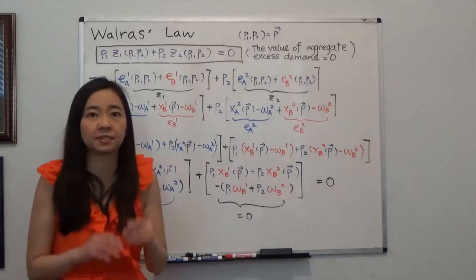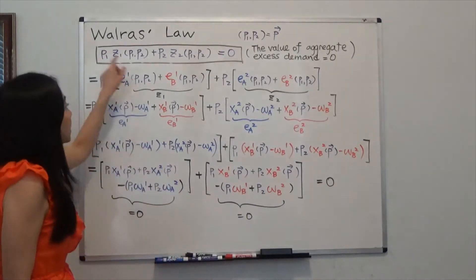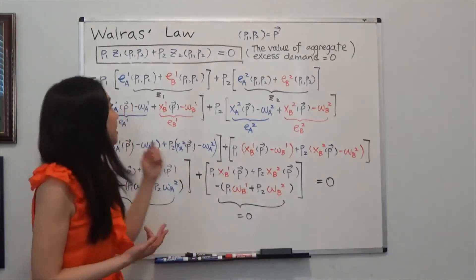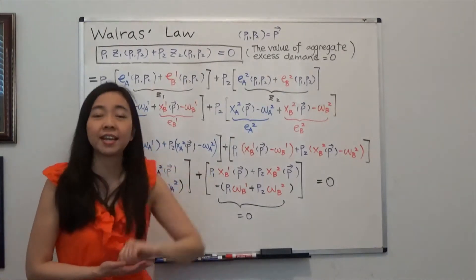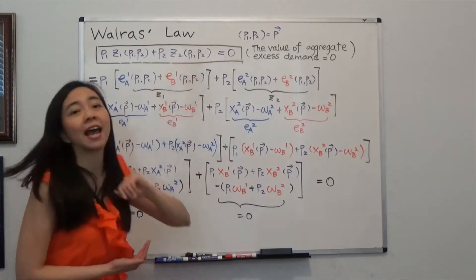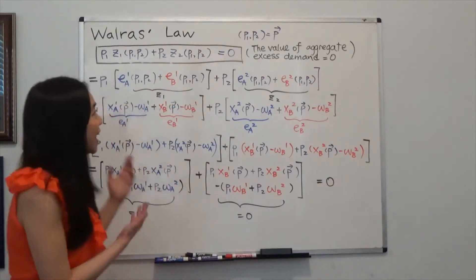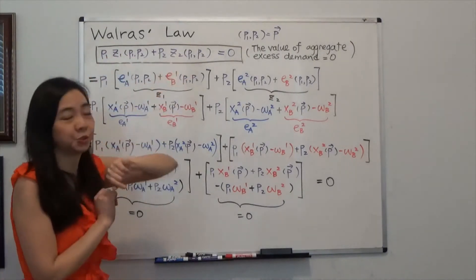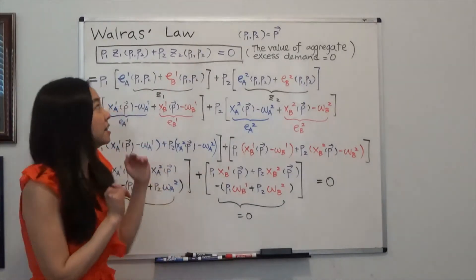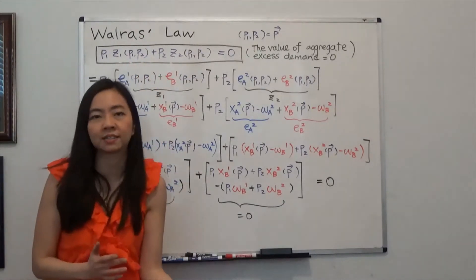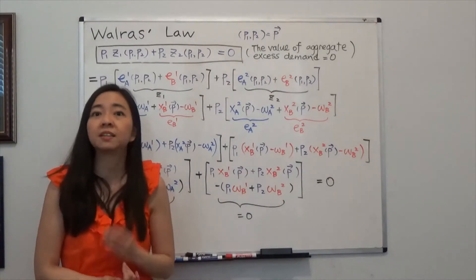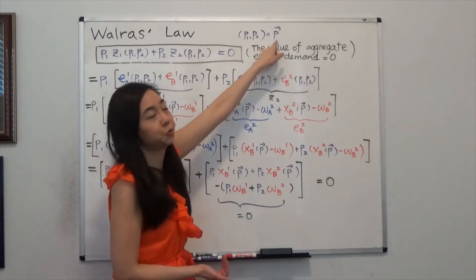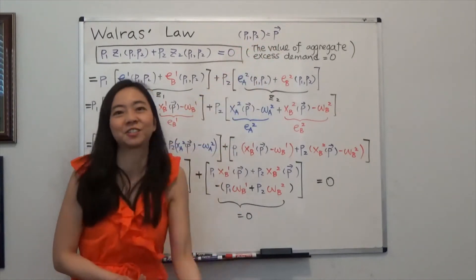Last time we established that z1 is the aggregate excess demand of good one from Alice and Bob, and z2 is the aggregate excess demand of good two from Alice and Bob. Today we're going to show that p1 times z1 plus p2 times z2 is equal to zero. Notice that p is just any kind of price — it does not have to be the equilibrium price. For notation, I'm going to use a vector p to replace p1 and p2, which just saves some work and doesn't change anything.